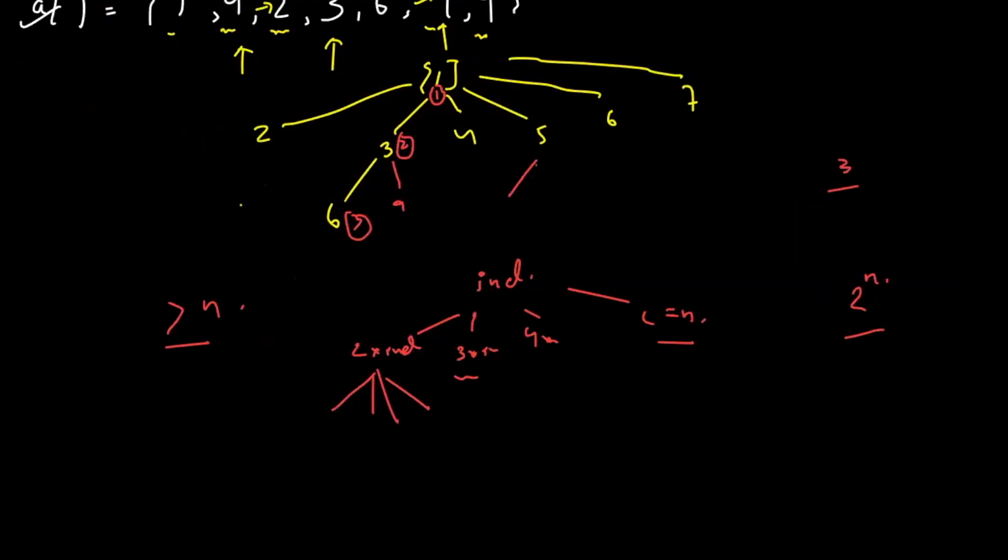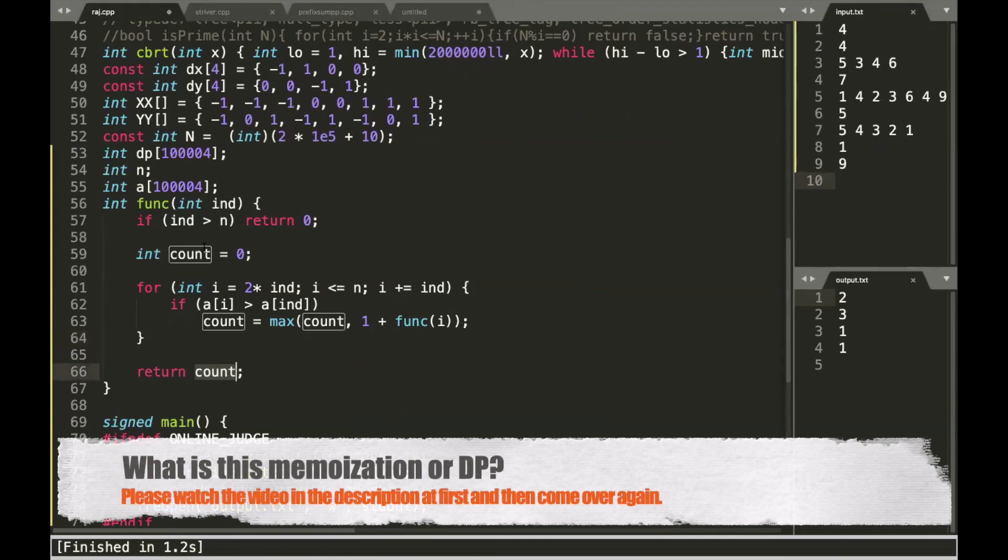Assume this over here, we had multiple recursion calls. So whoever gave the maximum, that answer I have to take. This is how recursion works because I am trying to find the maximum subsequence length. So I'll return that count. So we have got the count and we can write the base condition. Anytime it exceeds the boundary condition, we can return zero. So this was about the recursive code, which runs in exponential complexity.